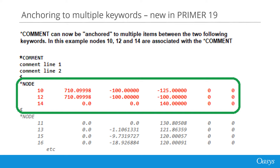They don't have to be in any particular order, and what this means is that a comment can identify a subset of the structure and can be associated with that, and that association is remembered. When the deck is written out, it will again be written out in this order.